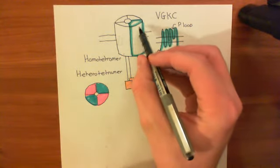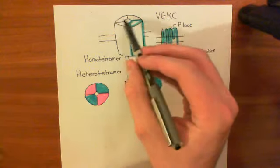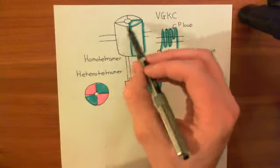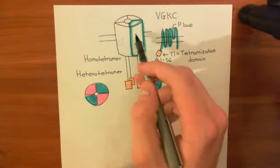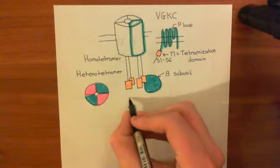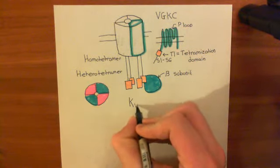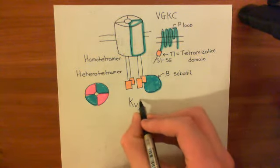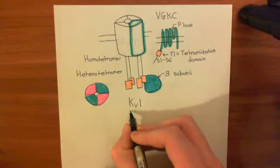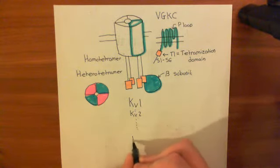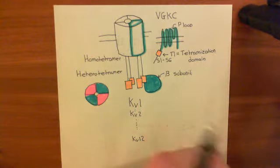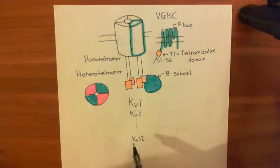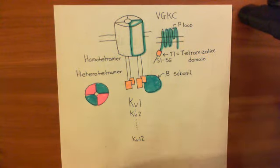These alpha subunits that we use to construct voltage-gated potassium channels — the pore-forming subunits — there are about 40 genes that code for them. We categorize these into families: the KV families. KV stands for voltage-gated potassium channel. We have the KV1 family, KV2 family, and so on all the way down to KV12. So there are 12 different families of genes, and each of these families contains multiple of those 40 genes.